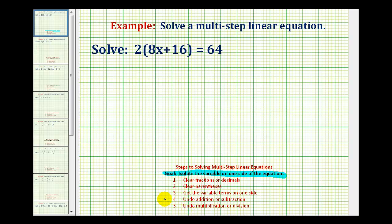Since our equation doesn't contain any fractions or decimals, our first step will be to clear the parentheses by distributing the two. So we'll have two times 8x plus two times 16. Well, two times 8x would be 16x, and two times 16 is 32, so we have plus 32 equals 64.